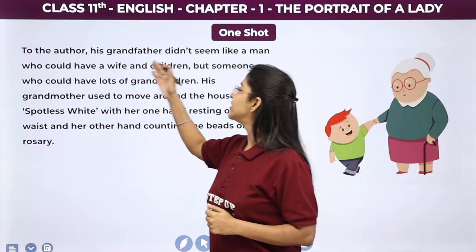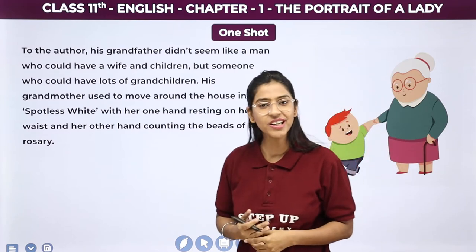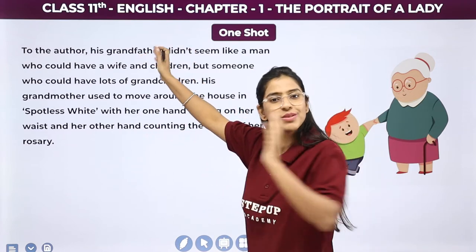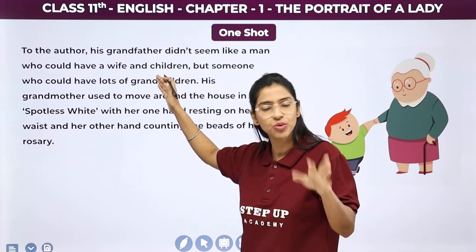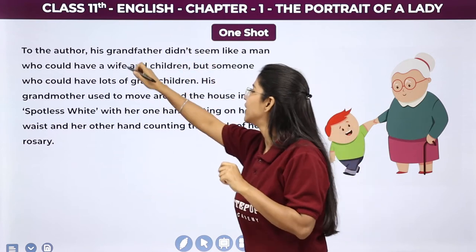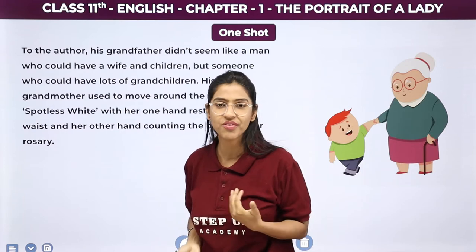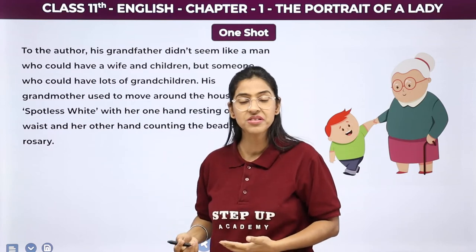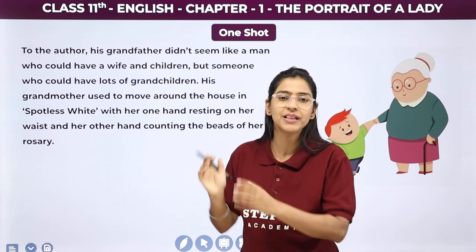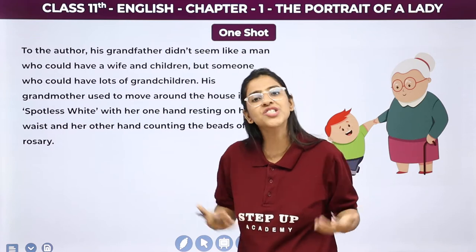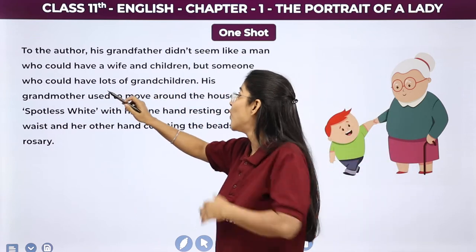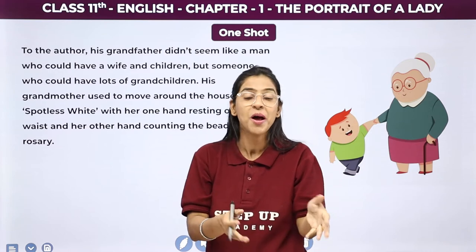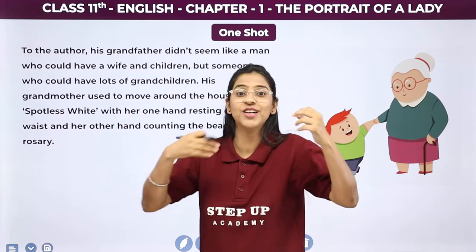To the author, his grandfather didn't seem like a man who could have a wife and children. Author ko, Khushwant Singh ko, kabhi aisa nahi laga ki unke dada ji — jis old lady ke baare mein hum baat kar rahe the, unke husband ke baare mein baat ho rahi hai — could have had a wife or children. But someone who could have lots of grandchildren — wo ye imagine kar sakte the ki itna buzurg vyakti hai jiske grandchildren kaafi saare ho sakte hain.